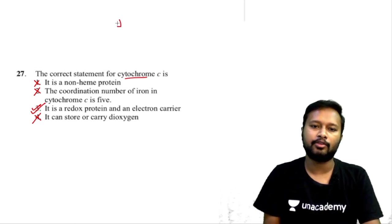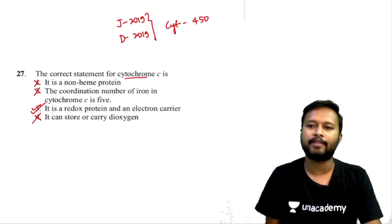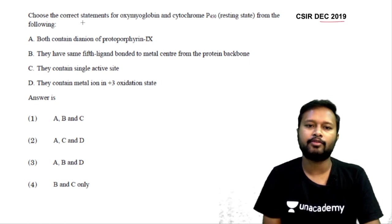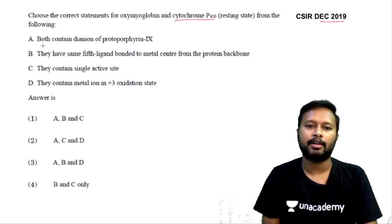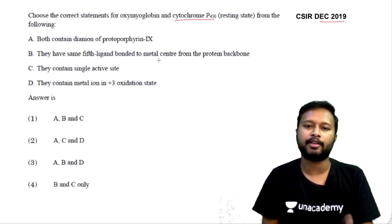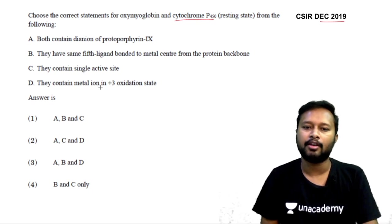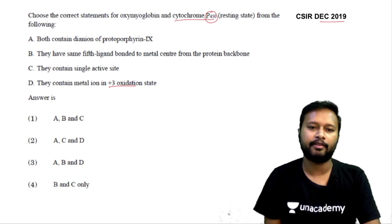Recent CSIR questions have been asked about cytochrome P450. From CSIR December 2019: choose the correct statement for oxy-myoglobin and cytochrome P450 — (1) both contain dianion of porphyrin ring, (2) they have a fifth ligand bonded to the metal center from the protein backbone, (3) they contain a single active site, (4) they contain metal ion in +3 oxidation state.